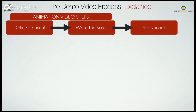A script is basically written words that tell you how the video unfolds. The typical script we do has a checklist: make sure it's not longer than 200 words for a 60-second video, and make sure there are three sections — the problem, the solution, and a call to action. So there's some structure to it.